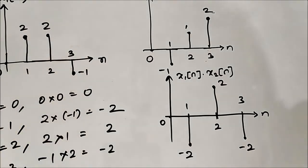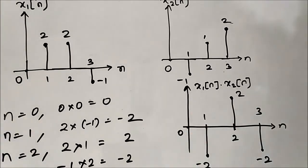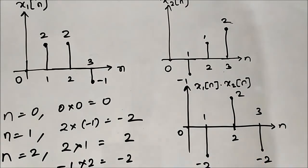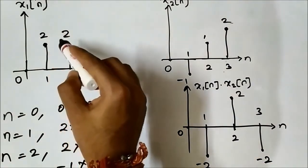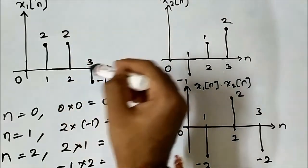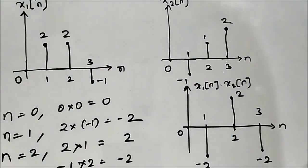So this is the signal multiplication again we have performed on another two discrete time signals. This is the basic concept, very simple. All we have to do is multiply the amplitude values at the respective discrete time instances in both the signals.